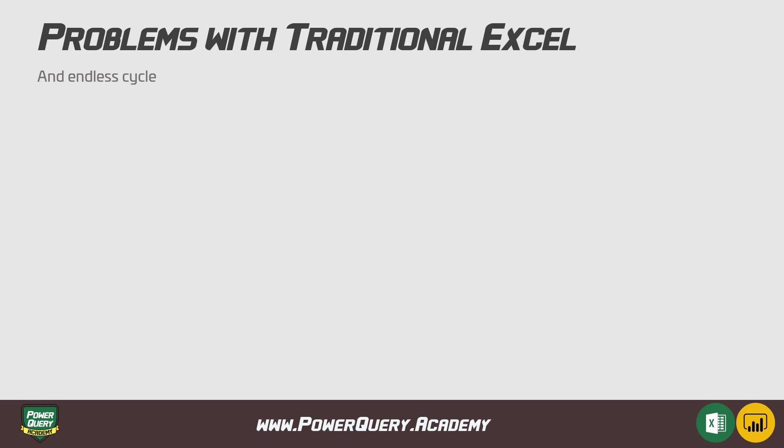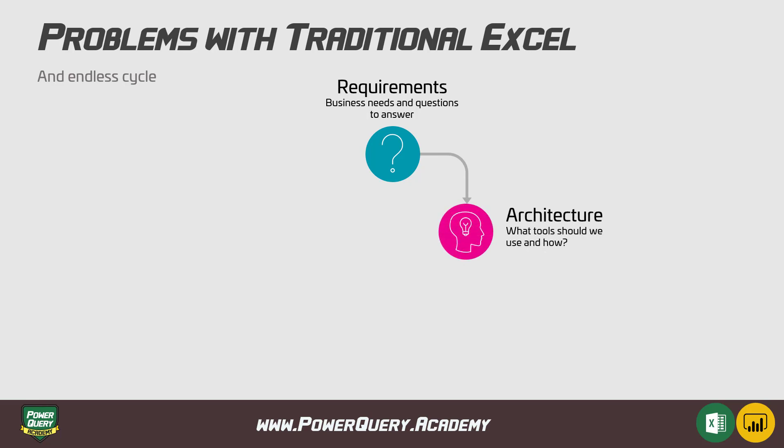Every time that we try to create a solution, we need to start by gathering all of the requirements — what do we need to create, and what are the questions that we need to answer? Once we have all the requirements written down, we can go to the next phase, which is actually creating the model or writing down a diagram of what we need to do to get to the solution. Once we know how to get there, we need to execute that plan, which can actually take a lot of time.